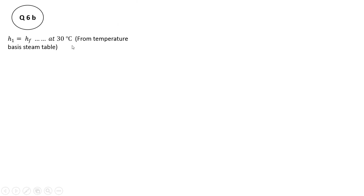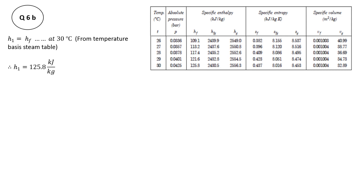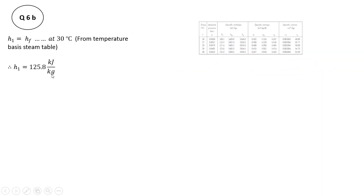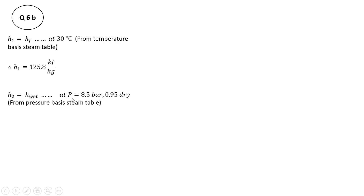Since feed water is supplied at 30°C, h1 equals hf at 30°C from the temperature-basis steam table — that is, the specific enthalpy of saturated water at 30°C. From the steam table, hf at 30°C is 125.8 kJ/kg. Then h2 is the enthalpy of wet steam, since steam is generated at 8.5 bar with a dryness fraction of 0.95, so it is wet steam.